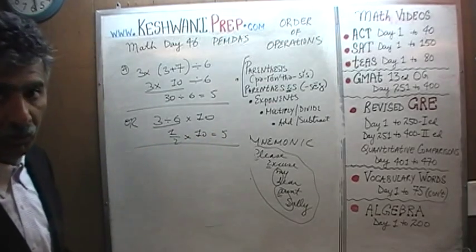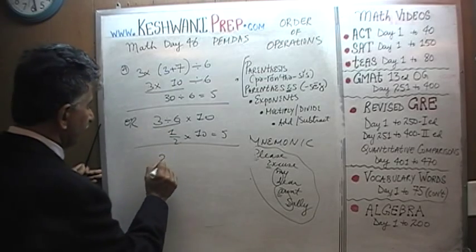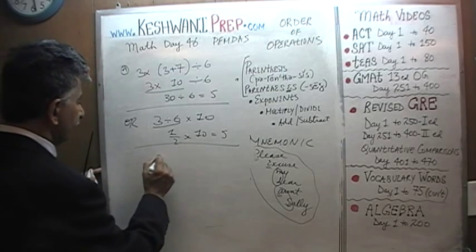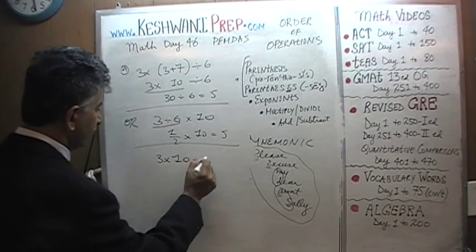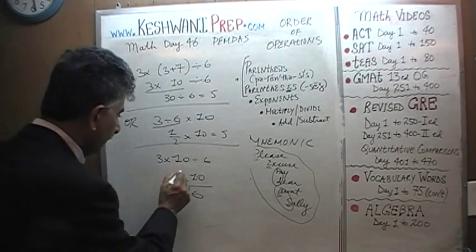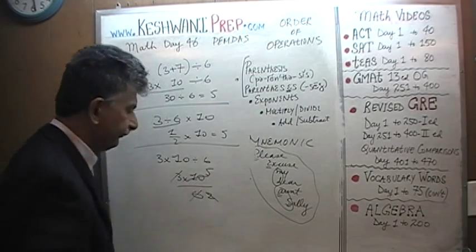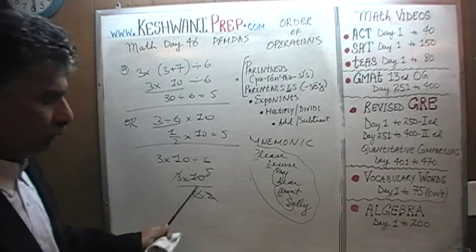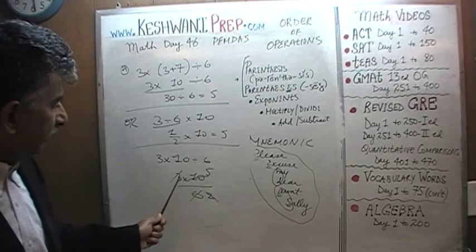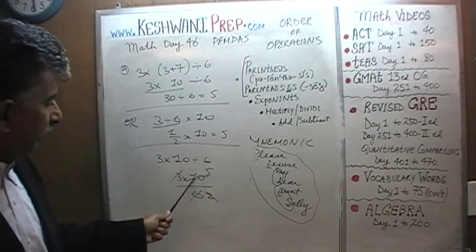Or we could have done the entire thing in one shot: 3 times 10 divided by 6, and 3 will cancel out with 6, leaving 2 times 5 which is also 5. That works because it doesn't matter whether we multiply the top first and then divide by 6, or whether we divide one of the top parts by the bottom and then proceed — the answer is the same.